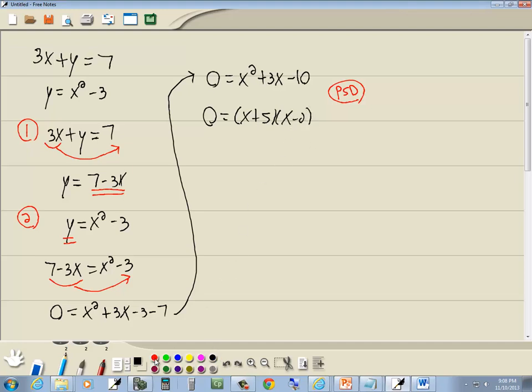Zero factor property. It says you get 0 on one side, you factor the other side, you set each factor equal to 0. So I'll set x plus 5 equal to 0, and x minus 2 equal to 0. And solve those. And we get x equals negative 5, and x is equal to positive 2.